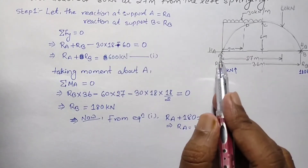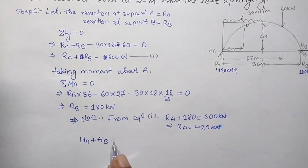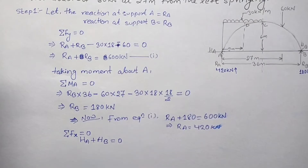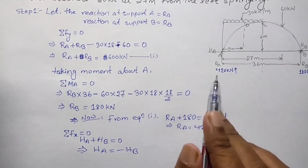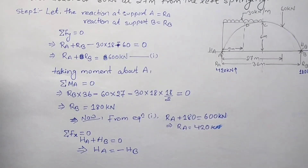We also have horizontal forces at the supports, HA and HB. Applying the equilibrium condition ΣFx = 0, we get HA + HB = 0, meaning HA = −HB. The horizontal forces at supports A and B are equal in magnitude but opposite in direction, keeping the arch in a stable condition.